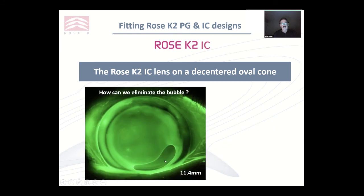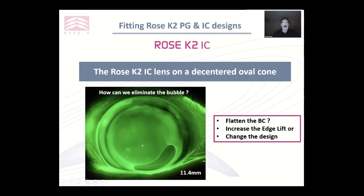Here's another case — how can we eliminate this bubble? This is an IC lens. Could we flatten the base curve? Yes, maybe by 0.1, probably go a little bit flatter. Could we increase the edge lift? Because it's definitely tight here and here — yes, I think overall we could increase the edge lift. Or could we change the design? Maybe going to a smaller design like PG, which has a bit more lift in the periphery, may be better. Because the IC has a very large back aspheric optic zone — you can see it runs from here to here — which is why we're getting this bubble trapped along the edge where the graft is. Going to a smaller diameter with a little bit more lift like PG would be more suitable here.